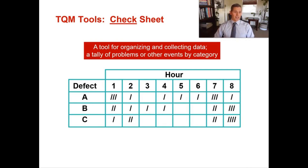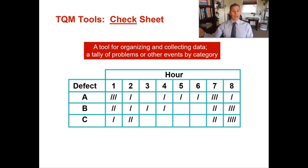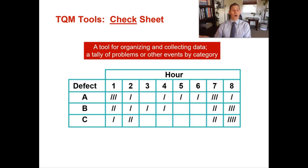For example, if this is a service firm and these are employee mistakes, maybe people are tired when they start work in the morning, so more defects happen in the first hour. Then they wake up, but get fatigued by the seventh and eighth hours. If it's a machine, maybe it isn't warmed up at the start of the day, or it's out of calibration by end of day. This tool doesn't solve problems — it just tells you where to look.